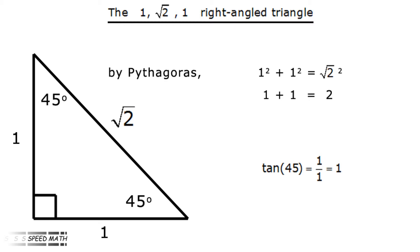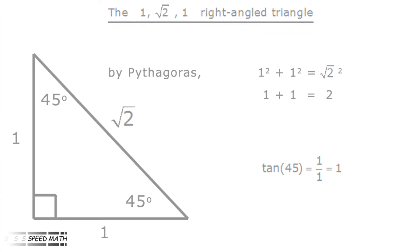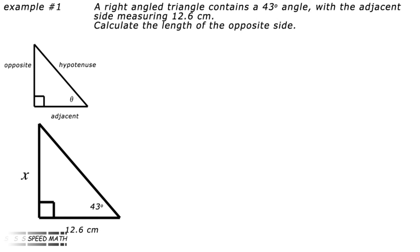Like the sine and cosine ratios, there are basically three types of problem. For each I'll work through an example. In the first type, you are given the angle and the adjacent side and are required to work out the opposite side.